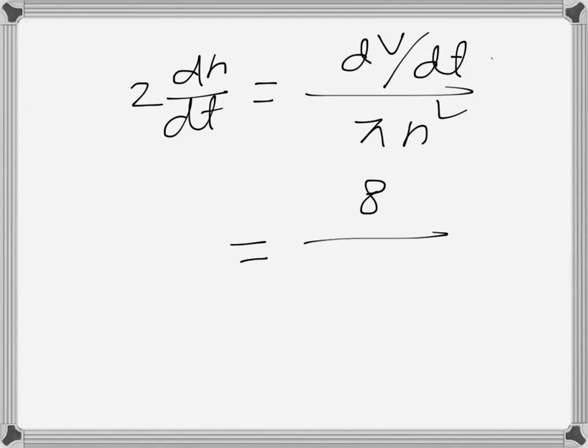Plugging in the values: dV/dt is 8, π is π, and h is given as 2, so r will be 1. With r = 1, this gives approximately 2.55 meters per minute.